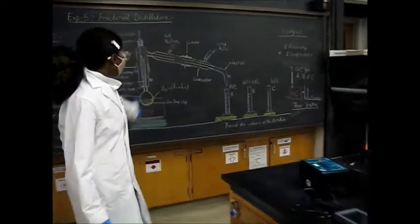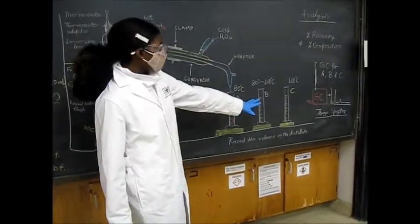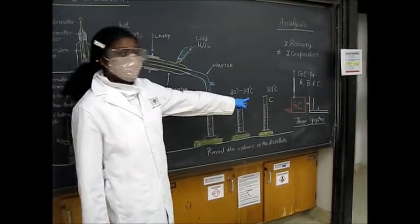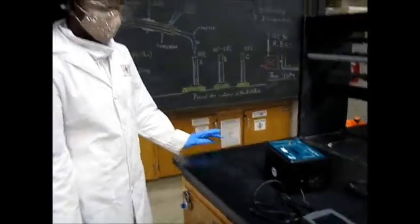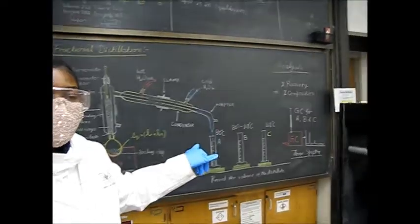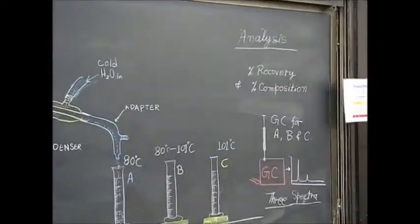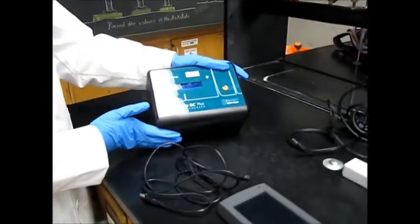So now after we've completed our fractional distillation and we have our three samples, we are now going to use our gas chromatography right here to analyze our data. So we're looking for our percent composition when doing the gas chromatography. So here this is our machine, our GC.